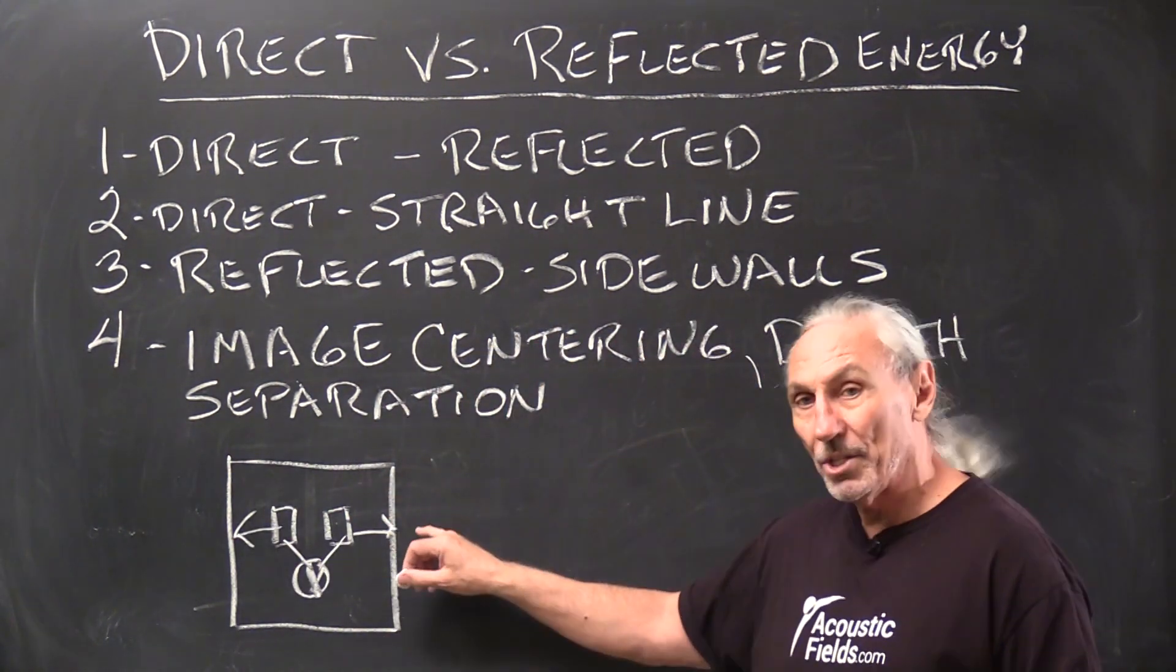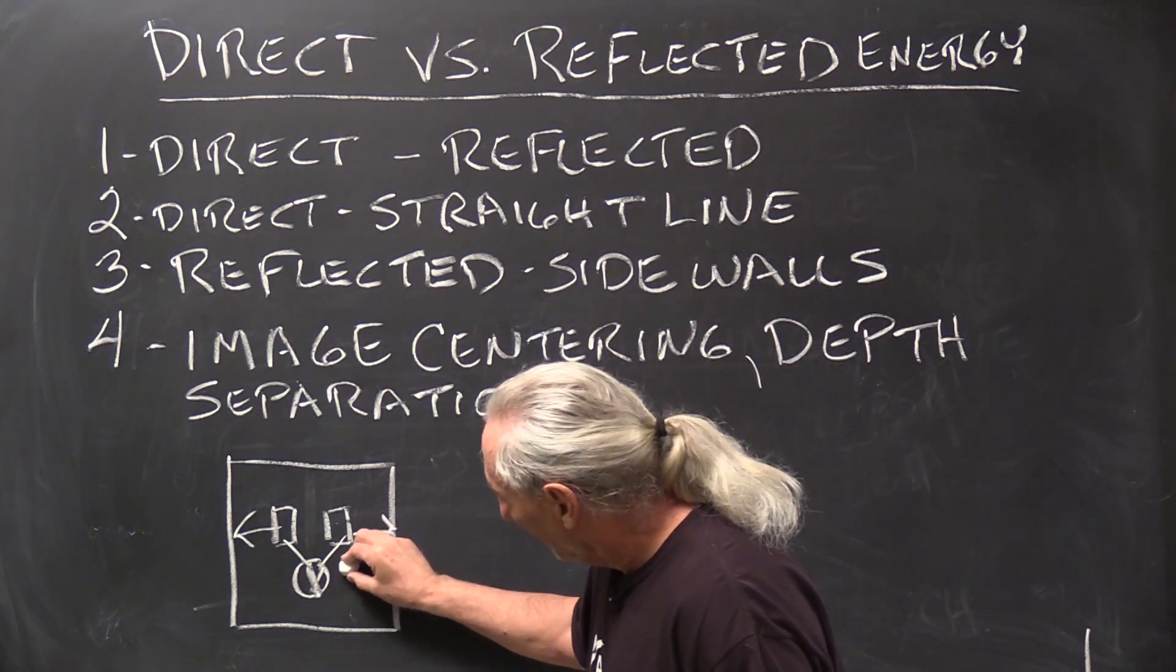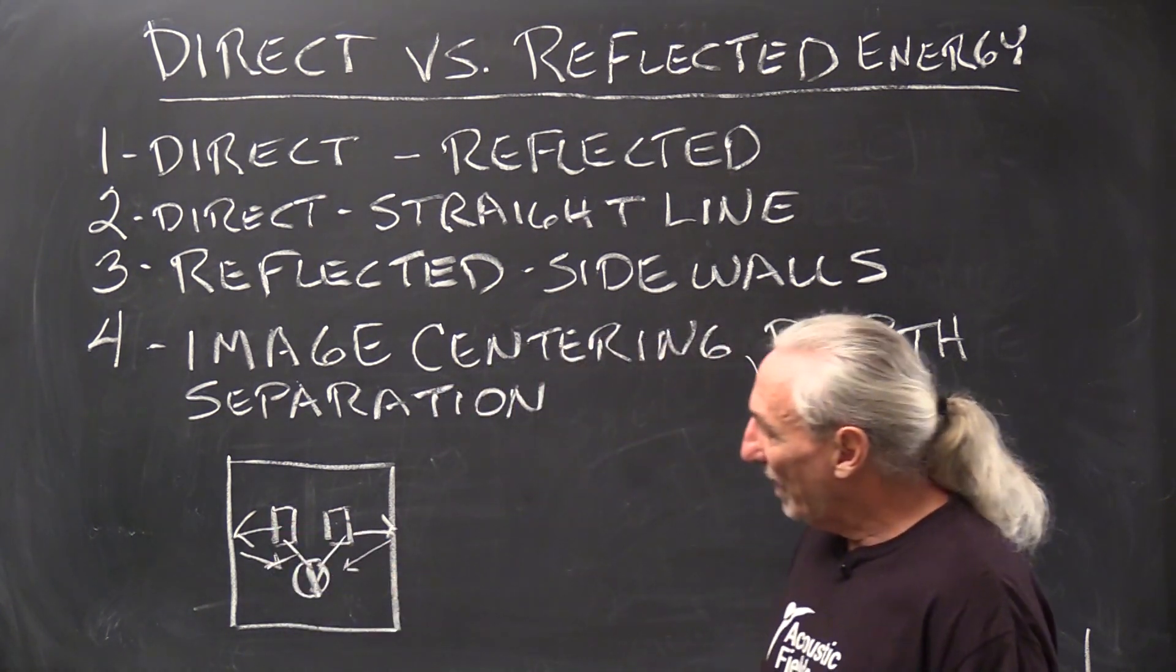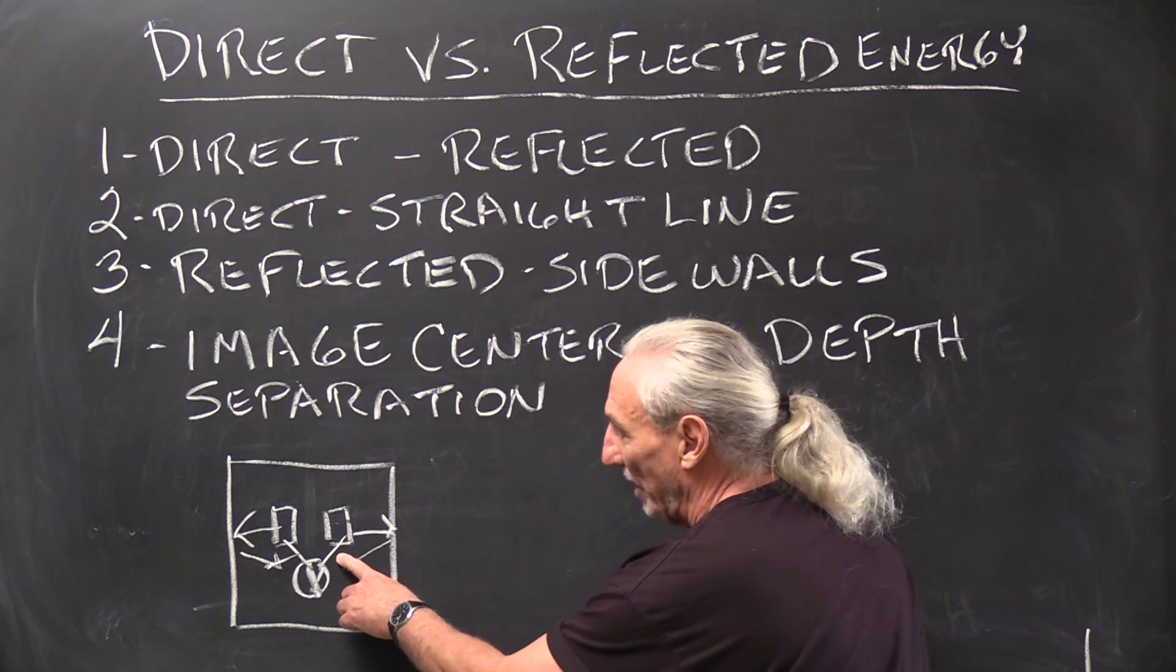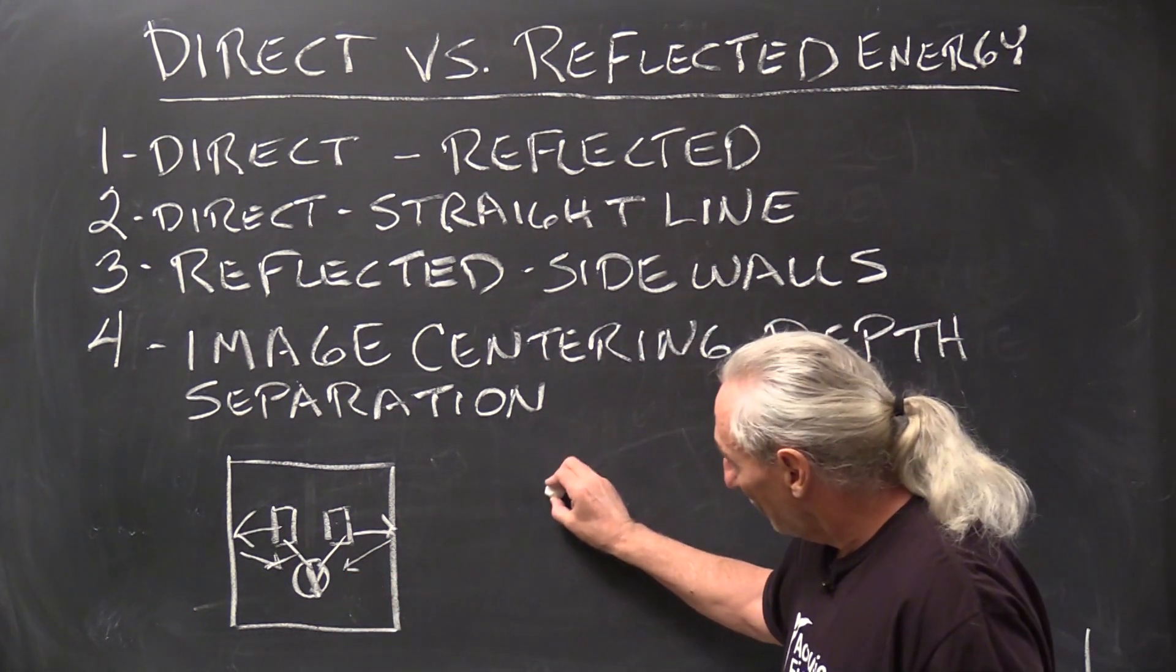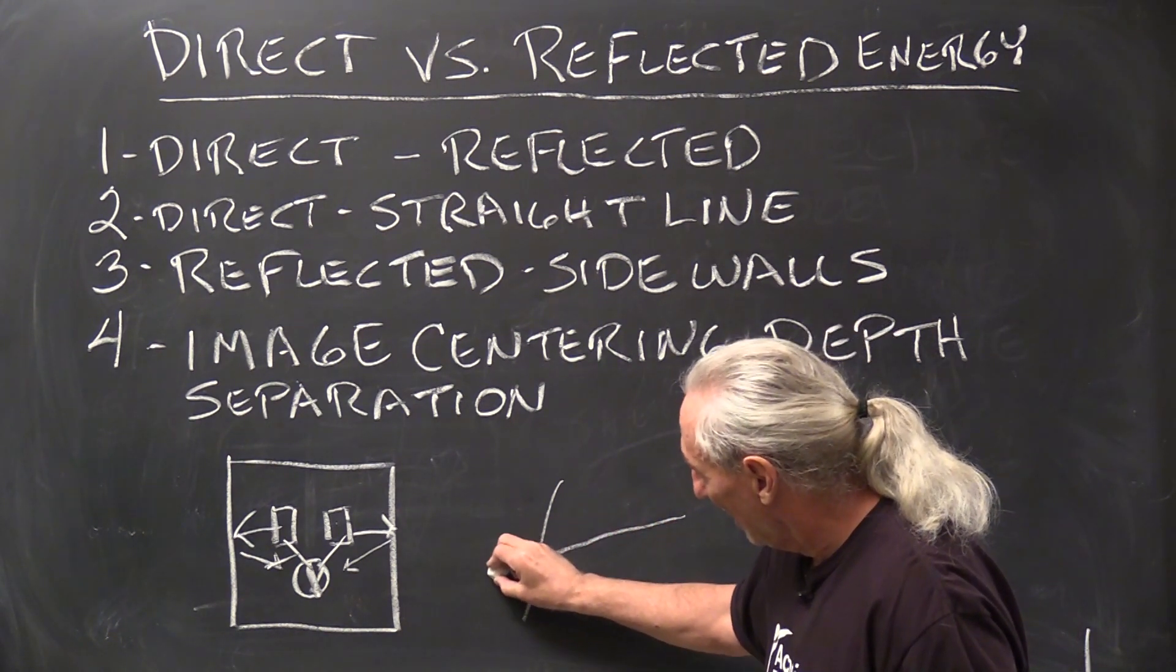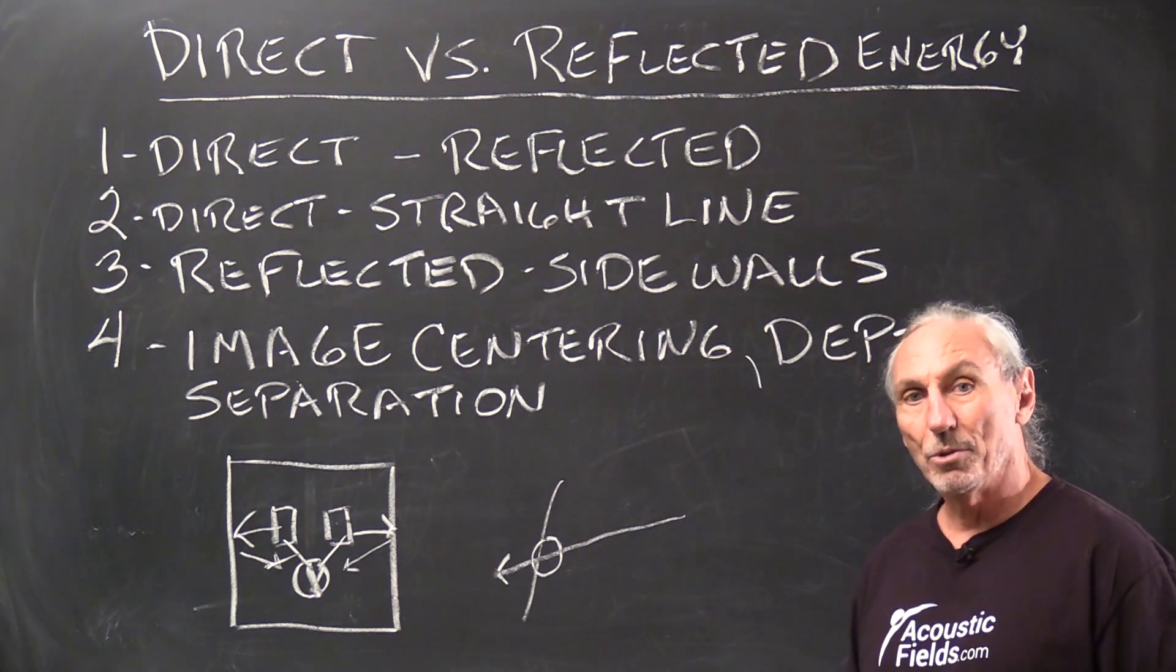So the straight line energy has to go somewhere. Where does it go? Well, first place it goes is to the side walls. And then what happens to the energy on the side wall? It becomes reflected and then it goes back to the listening position. So when this reflected energy crosses the direct energy line, that's distortion. If this is the direct line and this is the reflected line, the point where it crosses the direct produces distortion.